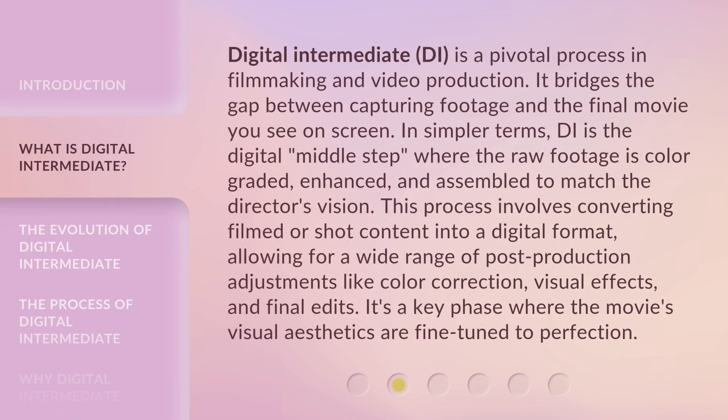Digital Intermediate is a pivotal process in filmmaking and video production. It bridges the gap between capturing footage and the final movie you see on screen. In simpler terms, DI is the digital middle step where the raw footage is color-graded, enhanced, and assembled to match the director's vision. This process involves converting filmed or shot content into a digital format, allowing for a wide range of post-production adjustments like color correction, visual effects, and final edits. It's a key phase where the movie's visual aesthetics are fine-tuned to perfection.